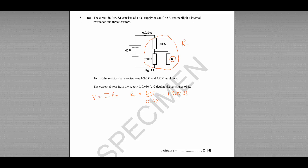Now we have two rules we can apply for resistors in series and resistors in parallel. What we have here is a 1000 ohm resistor in series with this unknown combination, which we'll group together and call Rx. So the total resistance RT, which is 1500, equals the 1000 ohm resistor plus Rx. Rearranging, Rx equals 500 ohms — that's 1500 take away 1000.